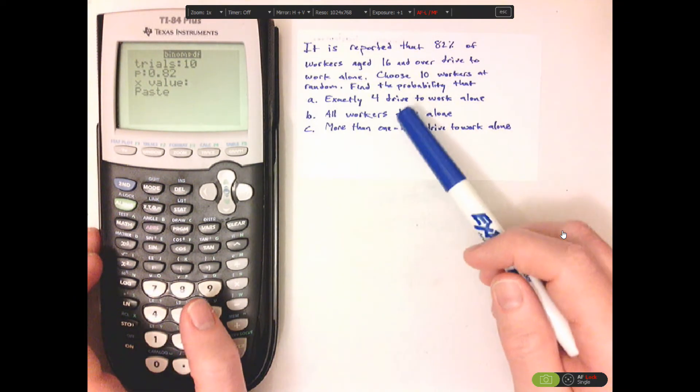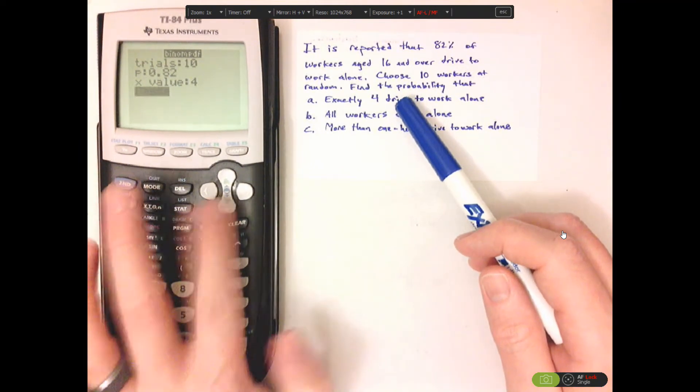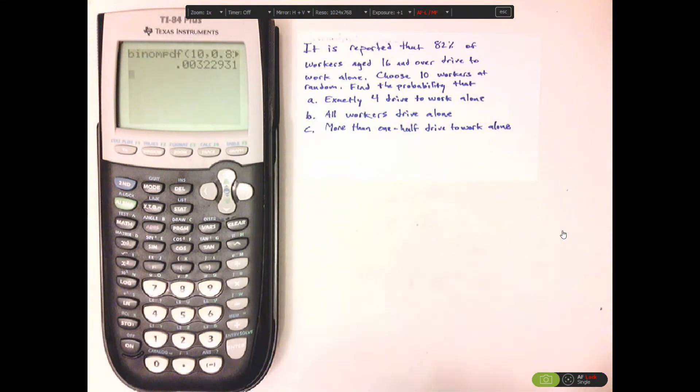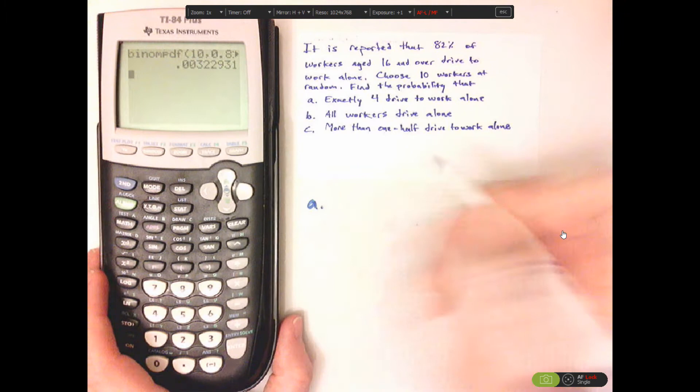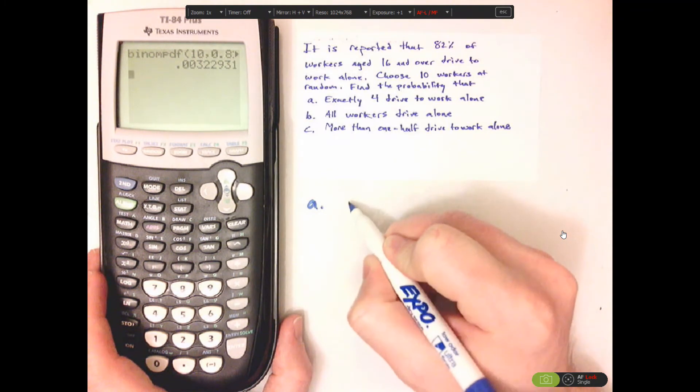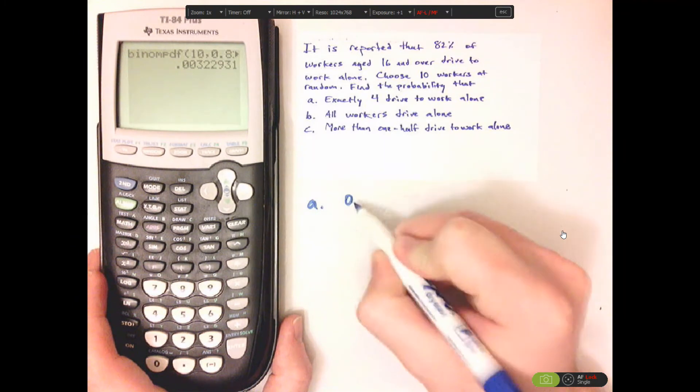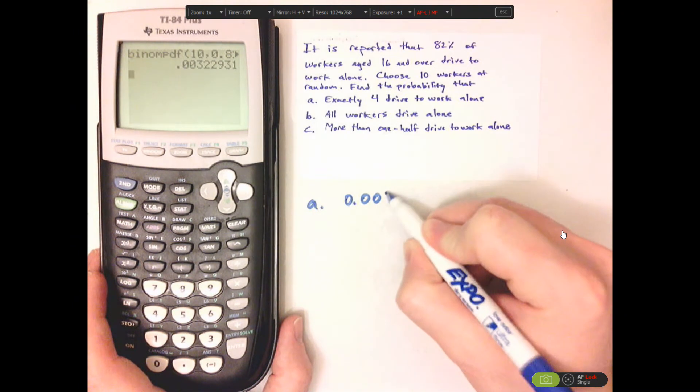Our X value is 4, or letter A. And then paste, and then enter. All right, so letter A is, let's do it to four decimal places. So 0.0032.